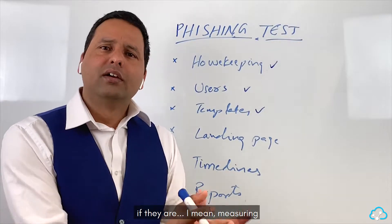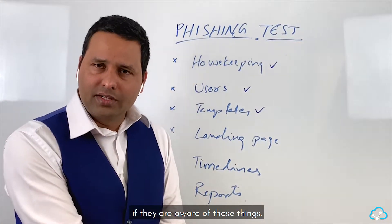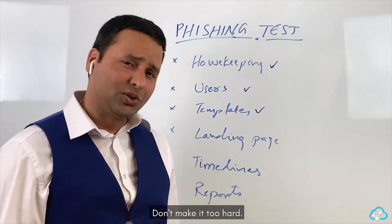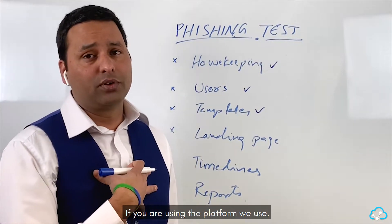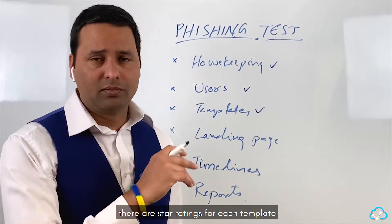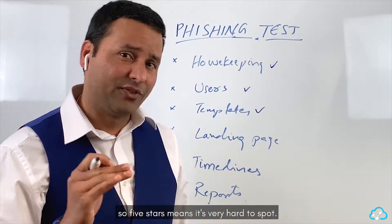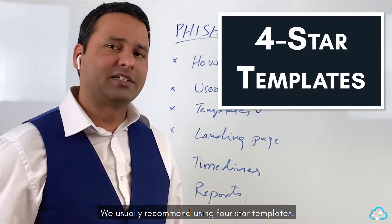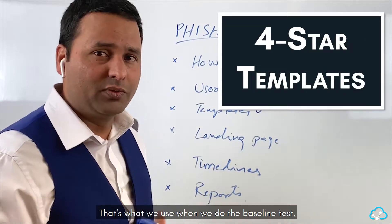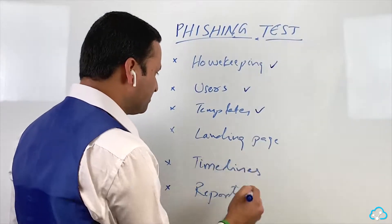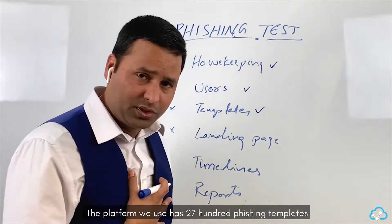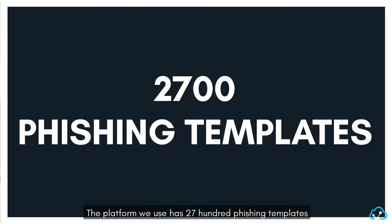It's all about measuring whether users are aware of these things and getting proper results. Don't make it too hard — if you're using our platform, there are star ratings for each template. Five stars means it's very hard to spot. We usually recommend using four-star templates for the baseline test. The platform we use has 2,700 phishing templates, so you have plenty of options.